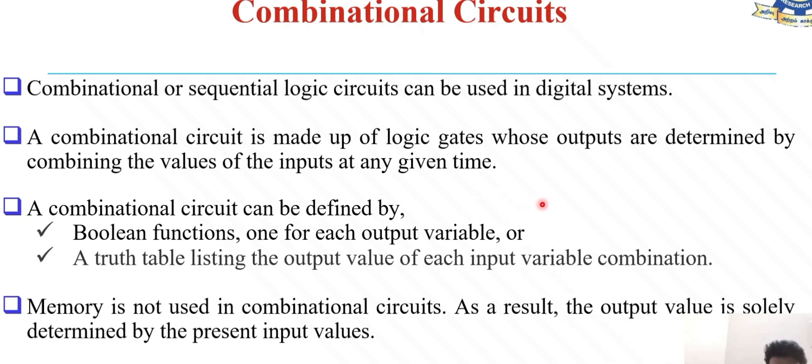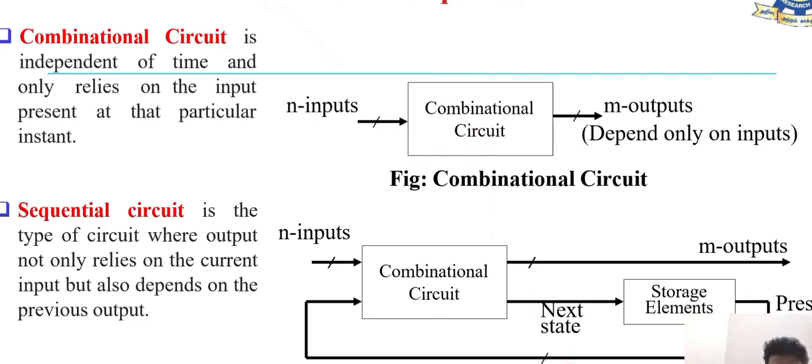The comparison between combinational and sequential logic circuits: combinational logic circuit output is independent of time and relates only to present inputs. But in the case of sequential circuits, output depends on current input and also on previous inputs. The previous input can be stored in memory space and used for further processing.